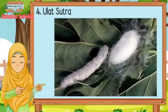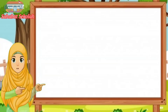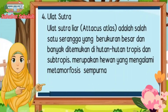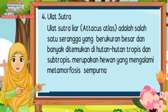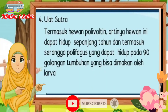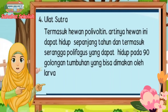Selanjutnya ulat sutra. Ulat sutra atau Attacus atlas adalah salah satu serangga berukuran besar yang banyak ditemukan di hutan-hutan tropis dan subtropis. Merupakan hewan yang mengalami metamorfosis sempurna dan termasuk hewan polifagus, artinya hewan ini dapat hidup sepanjang tahun dan dapat hidup pada 90 golongan tumbuhan yang bisa dimakan oleh larvanya.